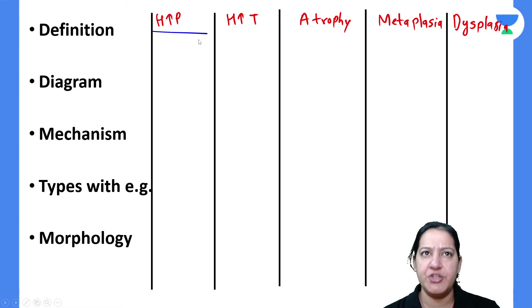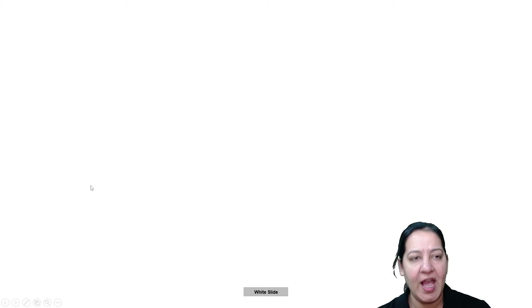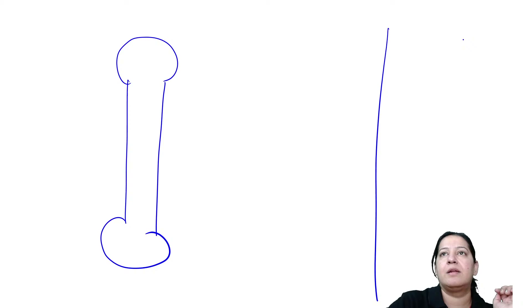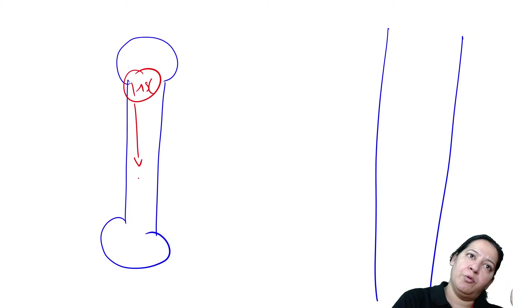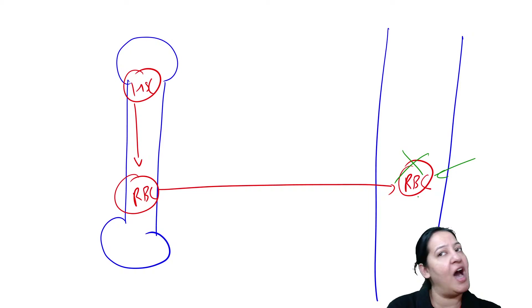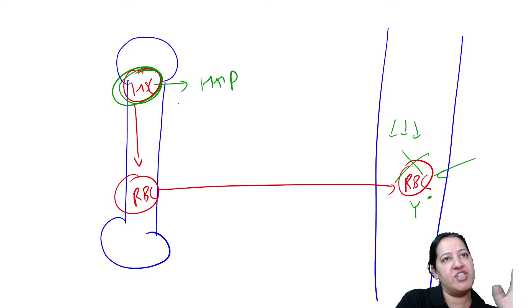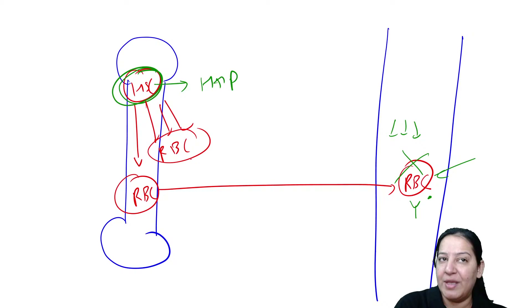Another example of pathological hyperplasia: bone marrow in hemolytic anemia. In hemolytic anemia, RBCs are destroyed in the blood vessels by antibodies or toxins. To compensate, the hematopoietic stem cells in the bone marrow undergo hyperplasia — dividing more and more to produce more RBCs. However, these RBCs are immature reticulocytes. The stress is the reduced number of RBCs in circulation.